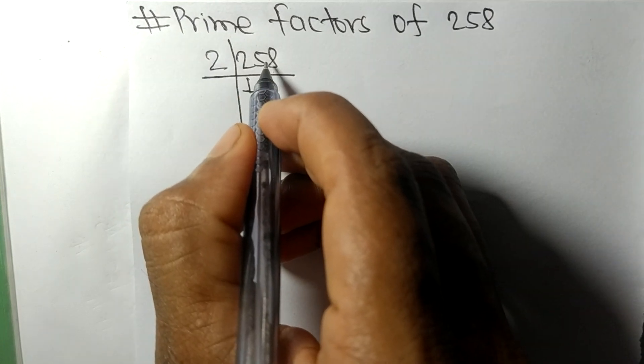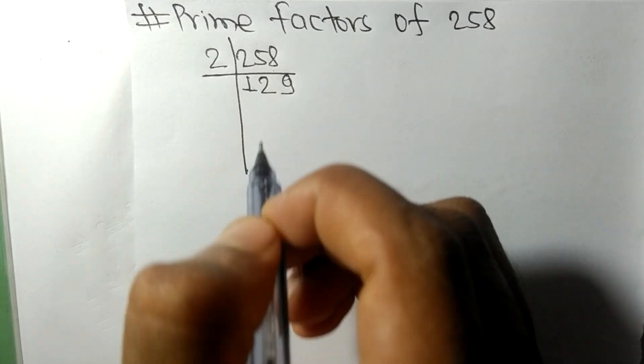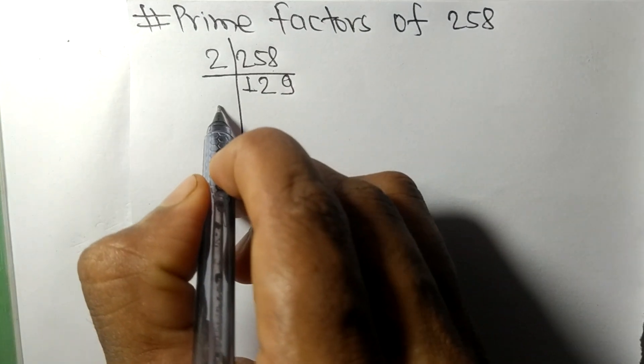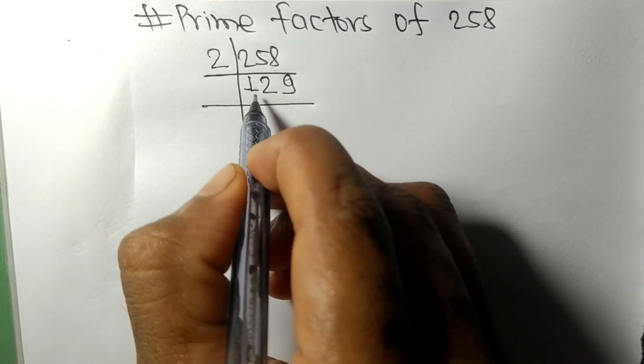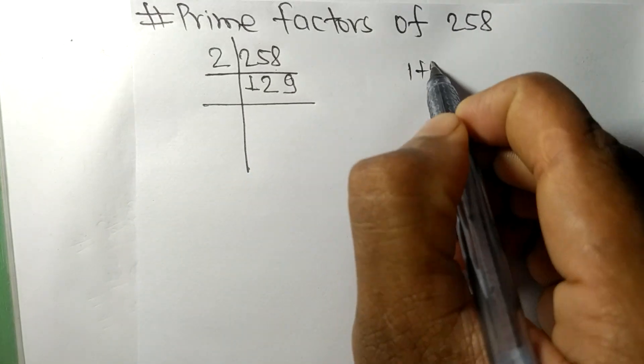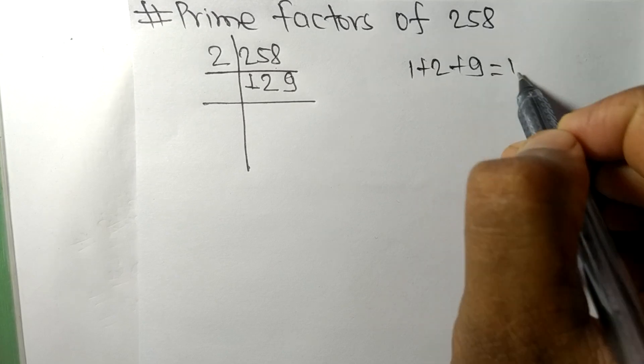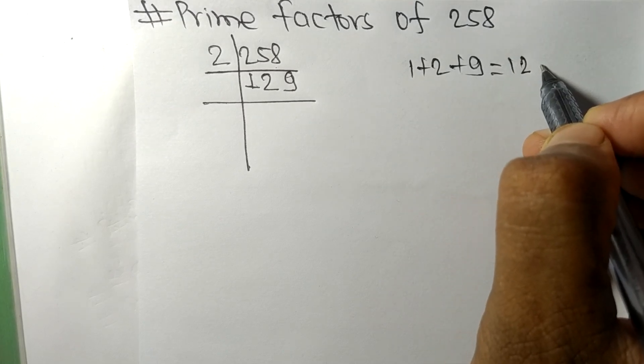means 4, remainder 1, so 18. 2 times 9 means 18. Now we got 129. When we add all these numbers, that is 1 plus 2 plus 9, we get 12, and 12 is